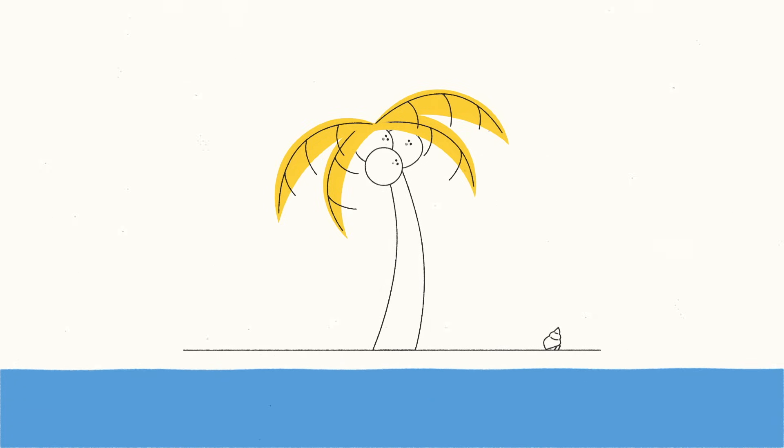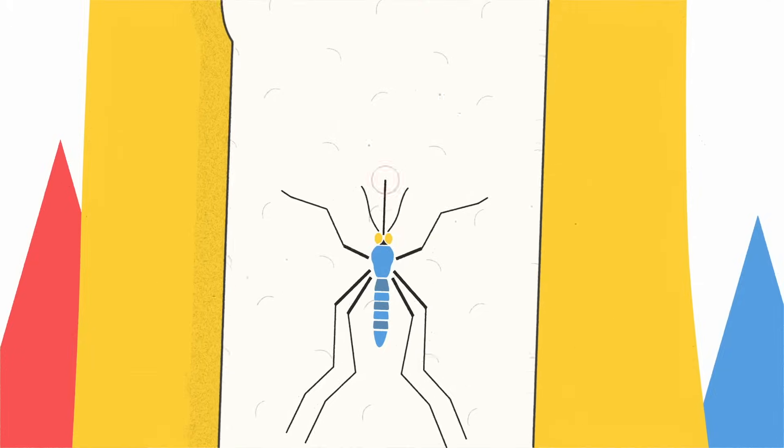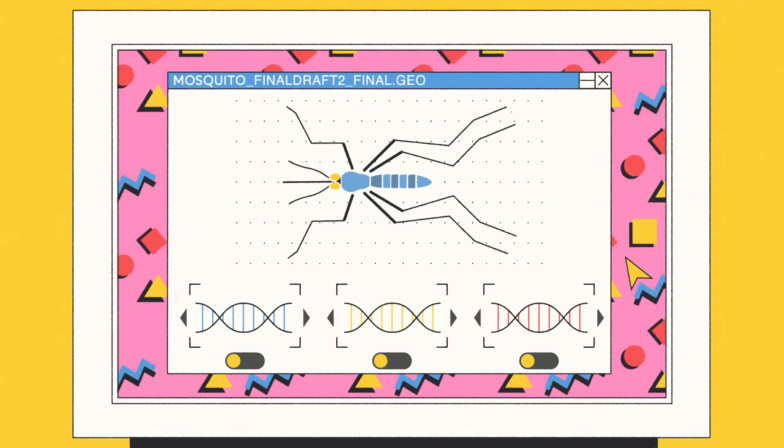CRISPR could create plants that yield larger fruit, mosquitoes that can't transmit malaria, or even reprogram drug-resistant cancer cells. It's also a powerful tool for studying the genome, allowing scientists to watch what happens when genes are turned off or changed within an organism.